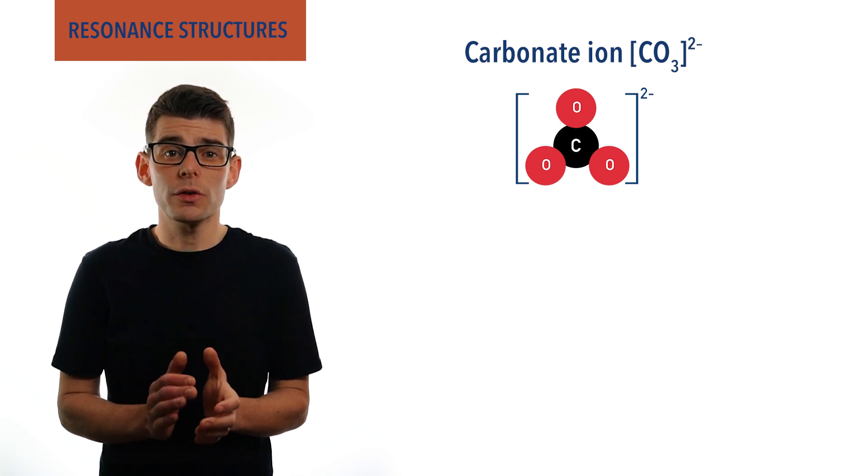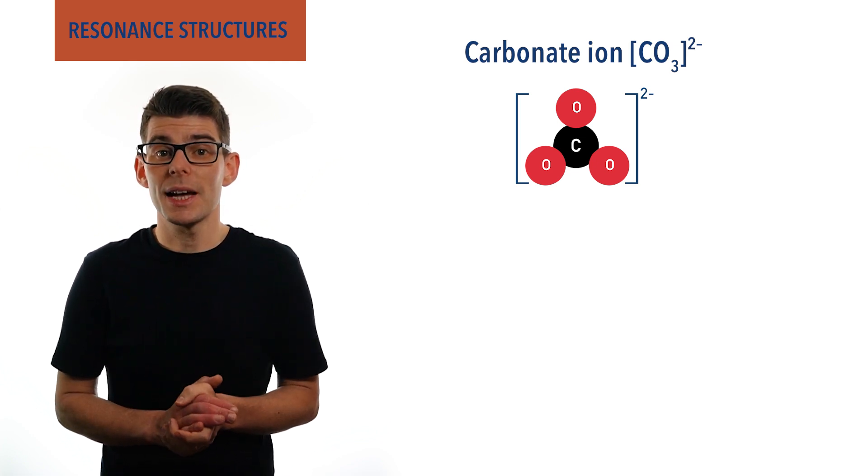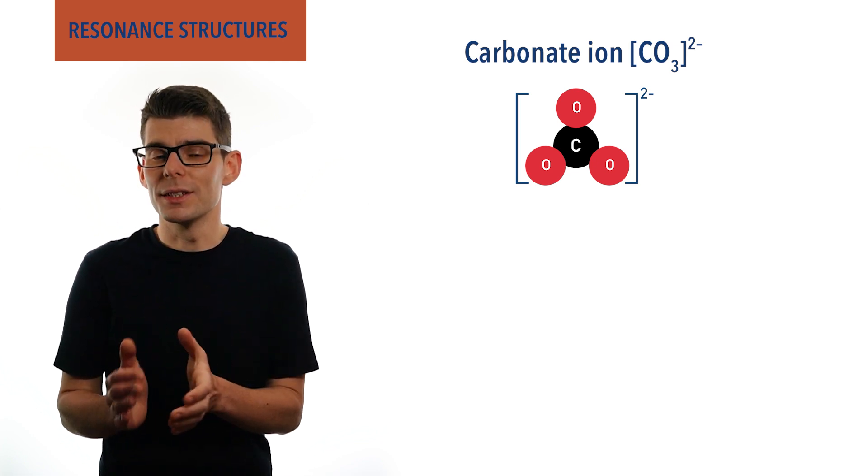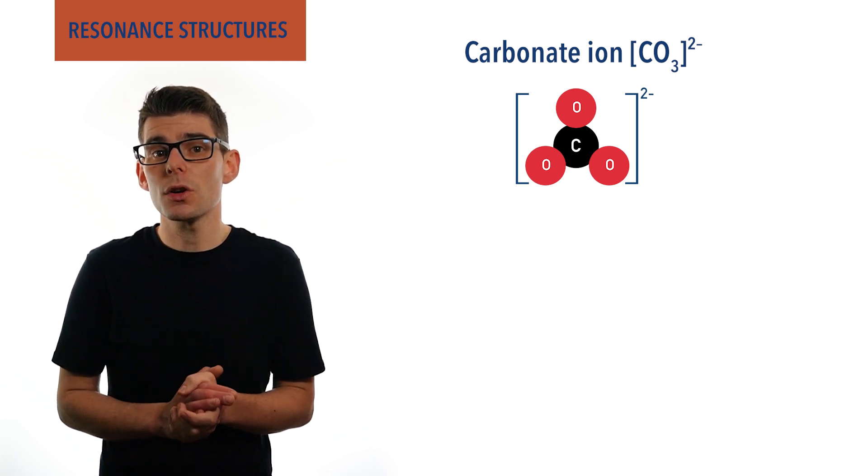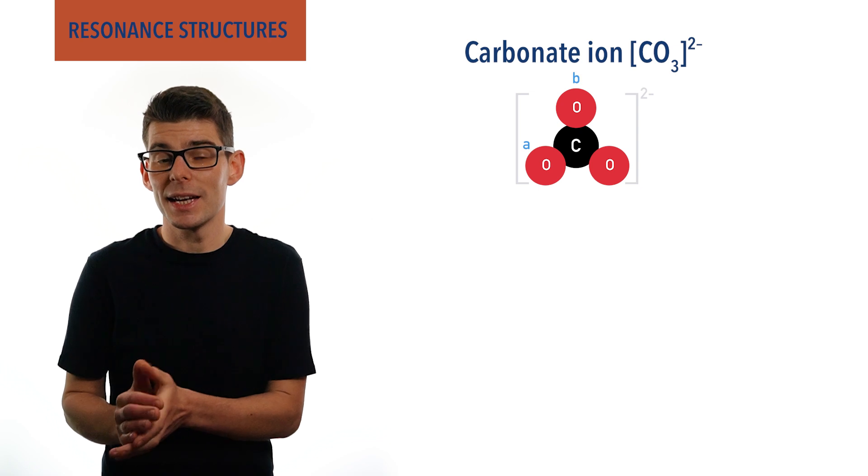There are several ways the oxygens can be bonded to the carbon atom, given several resonance structures. Again, to make things easier to see, let's label each oxygen atom as A, B, and C.